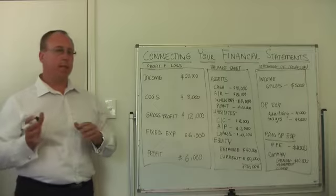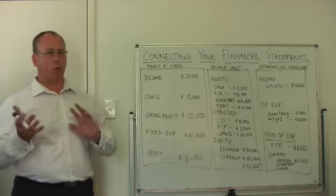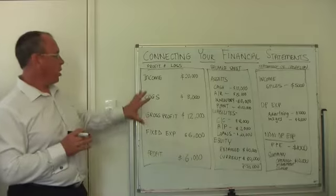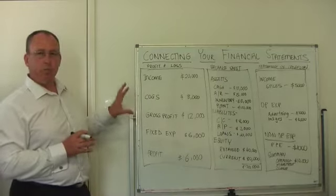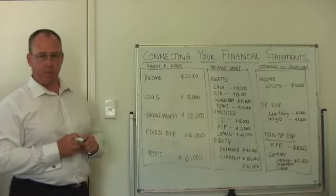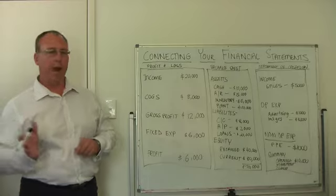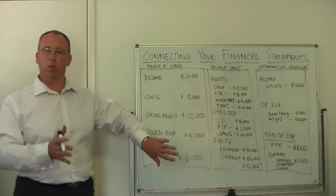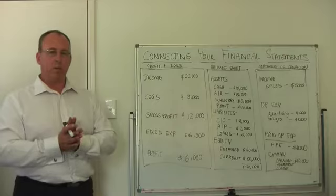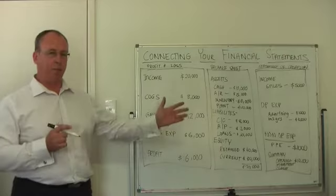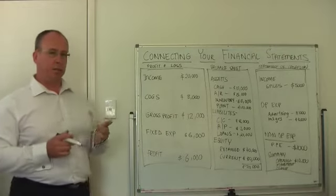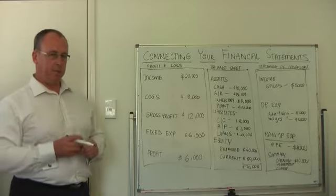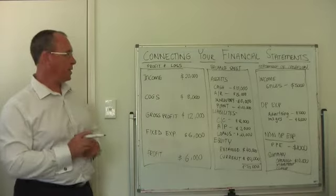Just quickly covering off the statements and what they all mean before we get started. Profit and loss is about generally the promises made in your business — it's a snapshot of how you performed. It's about the past. We generally look at the profit and loss at the end of a period to see how we performed. It's not necessarily about cash flow, as you're going to see as we go through this.